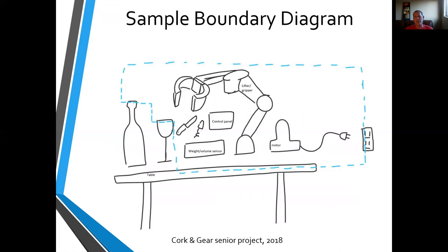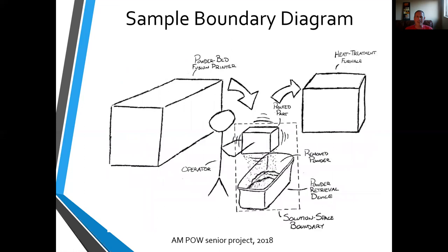Here are a couple of quick examples. This project was designing an auto wine bottle opener and pourer — they identified components they anticipated being involved, that they'd need power, and obviously there's a wine bottle and a glass, but they weren't changing those. Here's another one — this was to remove powder from metal 3D printed parts. The current process had someone essentially shaking the part, and what they were changing was what's inside the dotted line: coming up with a method to shake out the powder, not changing the user, the heat treatment, or the fusion printer. Every project is going to have a different sketch, but it's really useful to capture that sketch to show your scope.